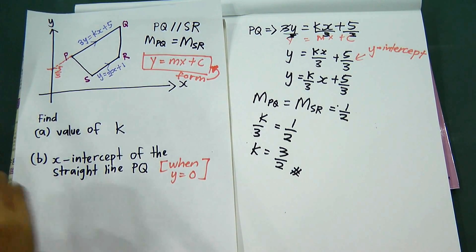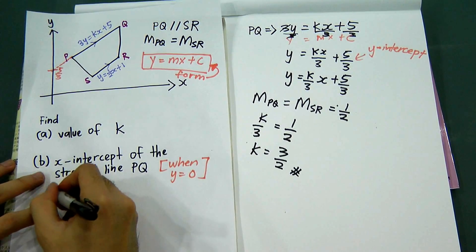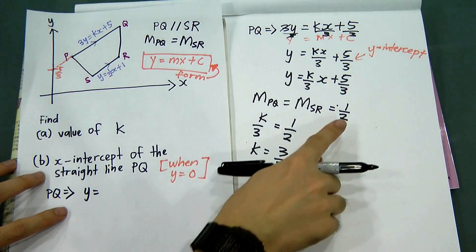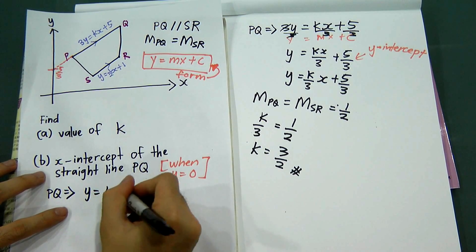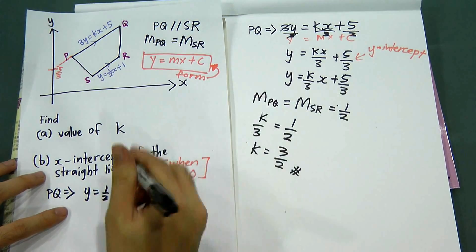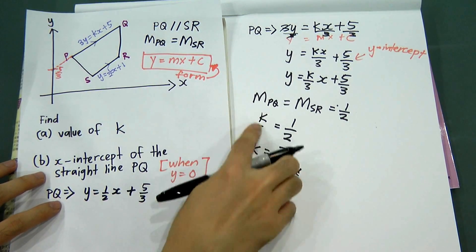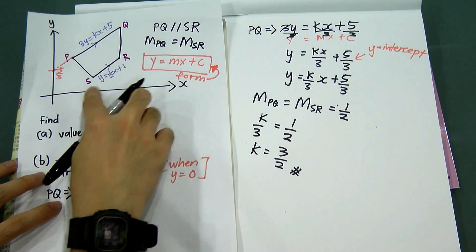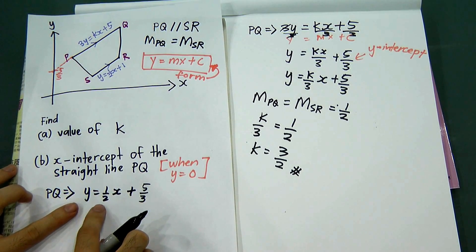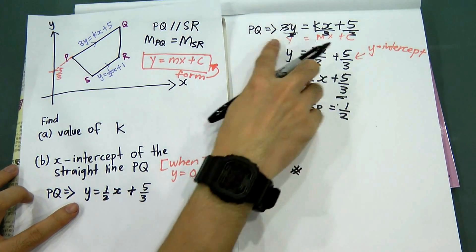To find the x-intercept for PQ, I rewrite the equation for PQ. In y = mx + c form, m is 1/2 and c is 5/3, so the equation for PQ is y = (1/2)x + 5/3. You can ignore the k/3 form now because both lines have gradient 1/2.